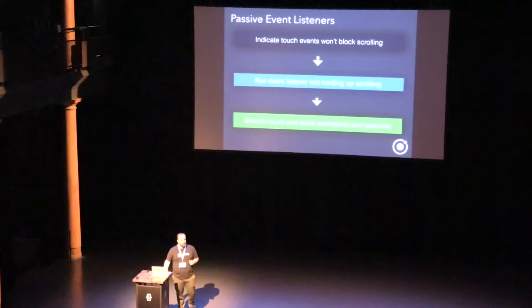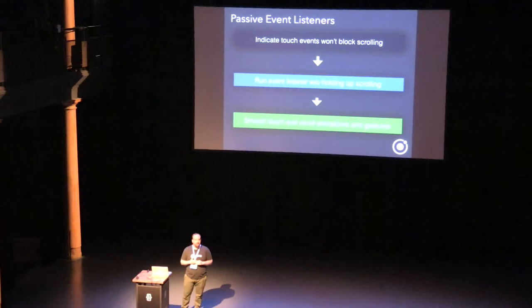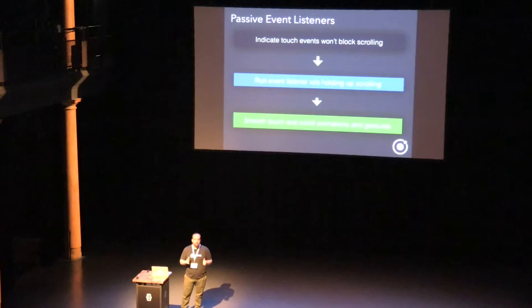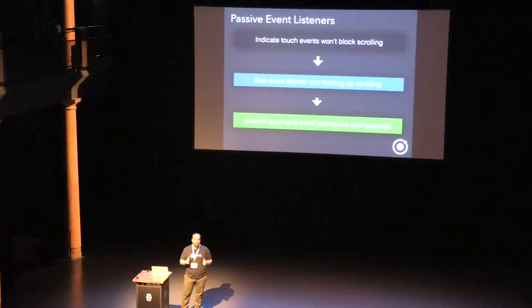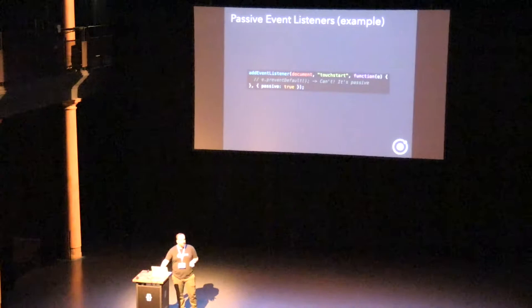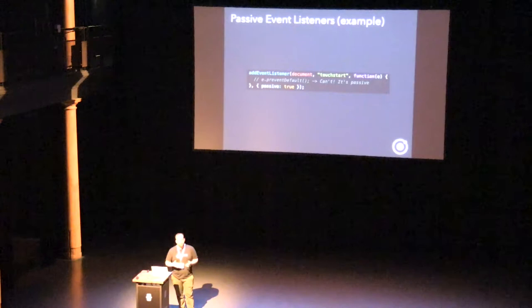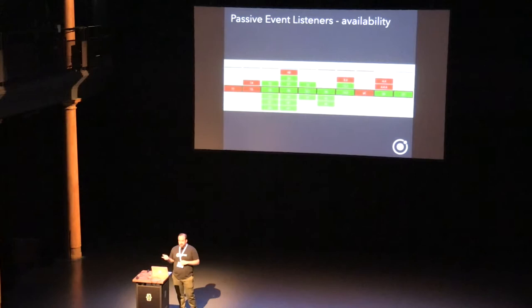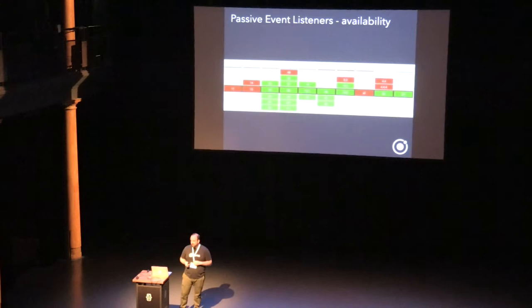A relatively recent feature is passive event listeners. By default, if you have a touchmove or touchstart handler, the browser de-optimizes thinking you might stop scrolling. Passive event listeners tell the browser you're not going to hold up scrolling, so it can run fast. You use it by passing passive: true to your addEventListener call. Just be careful — if you actually do want to stop scrolling, don't use this. It's available as of iOS 10.2 and in Android's browser.